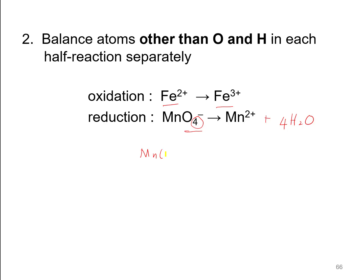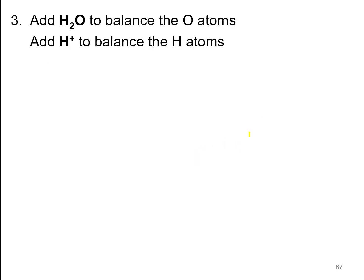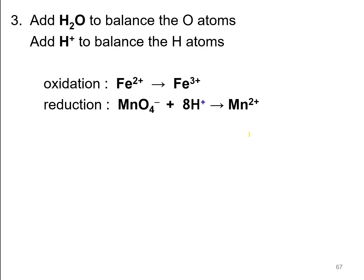Rewriting the reduction half equation: MnO₄⁻ → Mn²⁺ + 4H₂O. Now the left side has no hydrogen, but the right side has 8 hydrogen atoms (4 × 2). So we add 8 H⁺ to the left side. Counter-check: Mn left = 1, right = 1. O left = 4, right = 4. H left = 8, right = 8. All atoms are balanced. Now we need to add electrons to balance the charge.